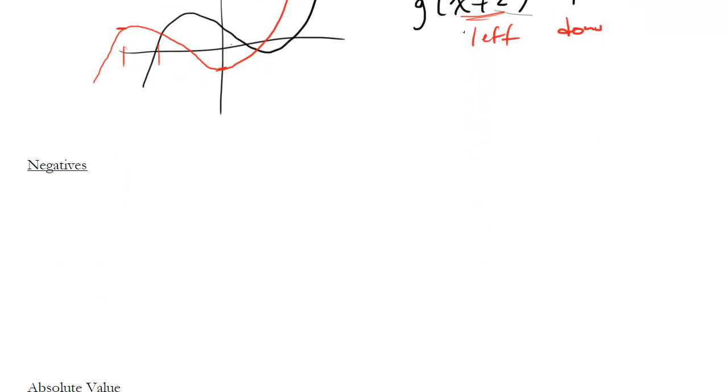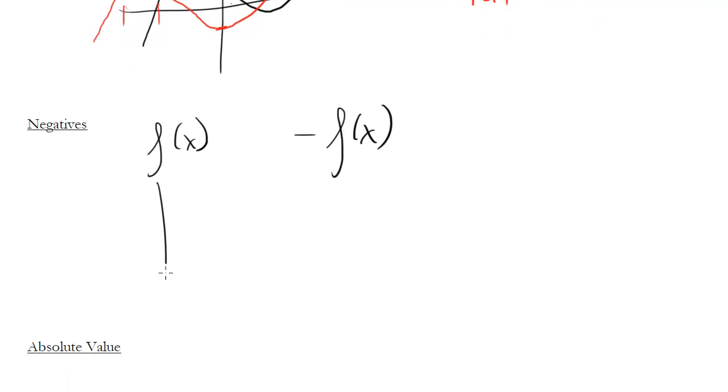One little note about negatives, if I have some f of x and then I make it negative f of x, what does that do? Well let's imagine my f of x looks something like this. That's actually too annoying and weird. Let's do something like this. What would happen in this case if this were f of x? Negative f of x would just flip it upside down. So now it's going to go down, up, down like that.